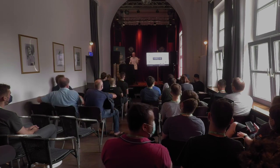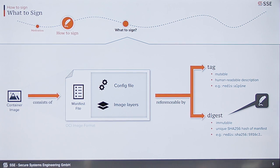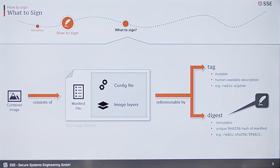The first step is: how do we actually sign our images? Before that, we have to question ourselves what we're actually signing. We're signing container images — yes, that's clear — but what exactly is a container image? A container image follows the OCI image format specification, OCI standing for Open Container Initiative. This specification says a container consists of a manifest file, which is a JSON file. These manifest files reference a config file and a bunch of image layers. The config file contains information such as which environment variables should be set in a container, and the image layers are tarballs which are extracted and squashed together to make up the whole file system within a container.